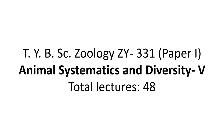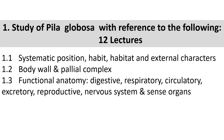The first chapter is nothing but the study of Pila globosa. Pila is the genus name and globosa is the species name. The common name of Pila globosa is the common apple snail. It is easily available and you might have seen it many times. Just as we studied Earthworm as a representative example of non-chordates belonging to Annelida, Pila globosa is also the representative example of non-chordates in TYBSc, which belongs to phylum Mollusca.